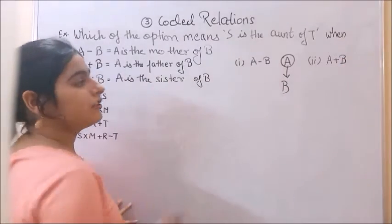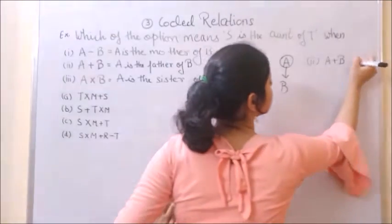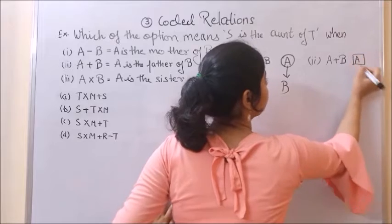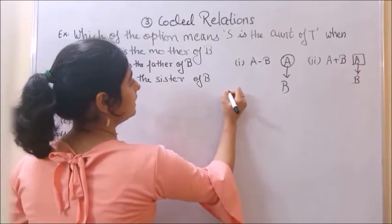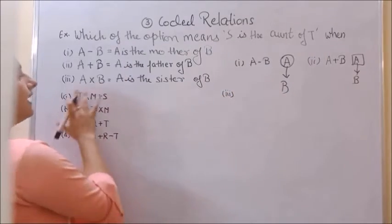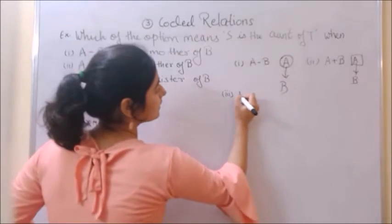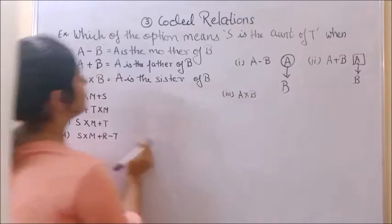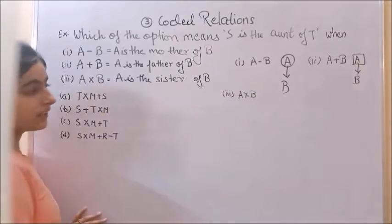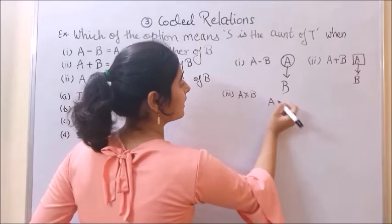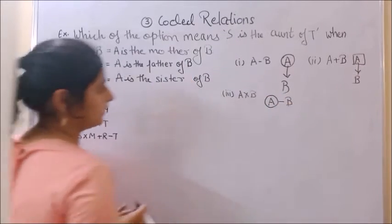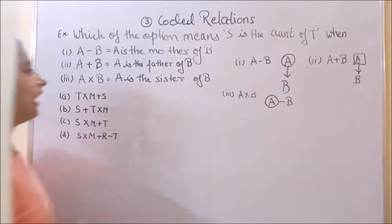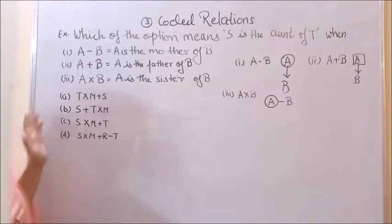A is the father of B. A is male and father of B. Third is A into B, which is A is the sister of B. A is sister of B. Now we will take these options one by one.